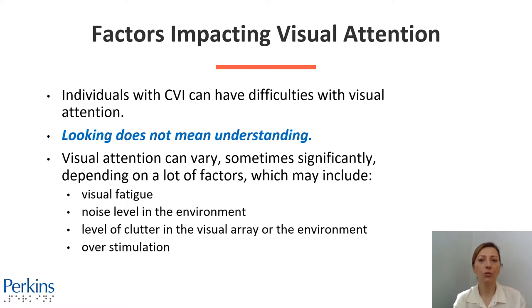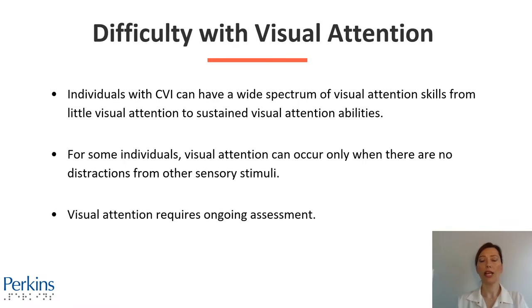Visual attention can vary sometimes significantly depending on a lot of factors, which may include visual fatigue, noise level in the environment, level of clutter in the visual array or in the environment, and over-stimulation. Individuals with CVI can have a wide spectrum of visual attention skills from little visual attention to sustained visual attention abilities. For some individuals, visual attention can occur only when there are no distractions from other sensory stimuli.